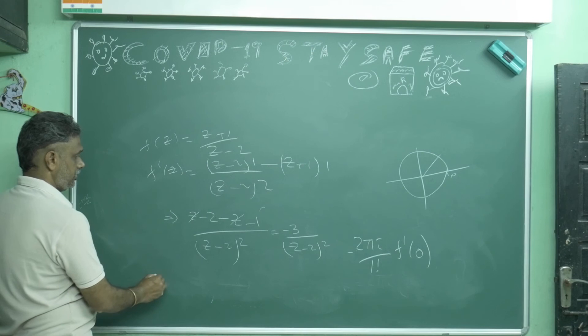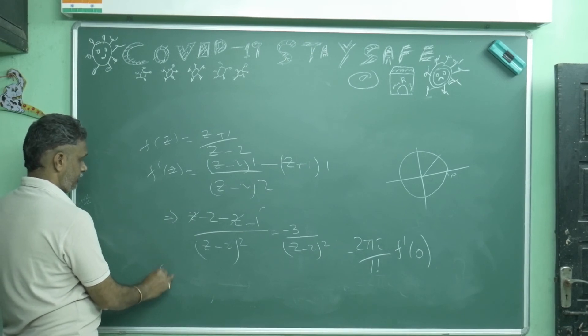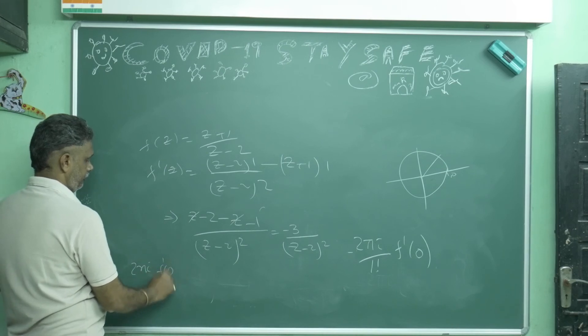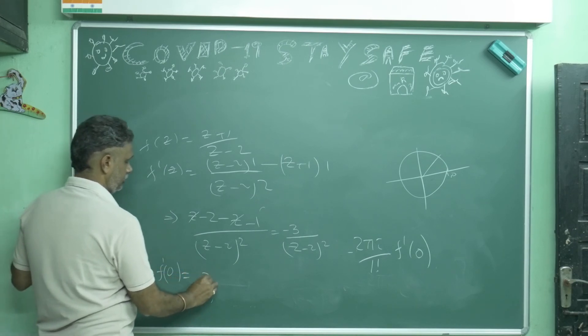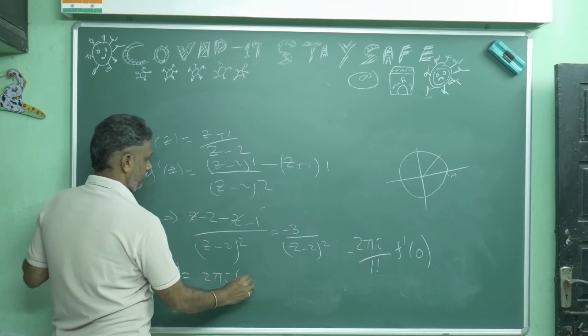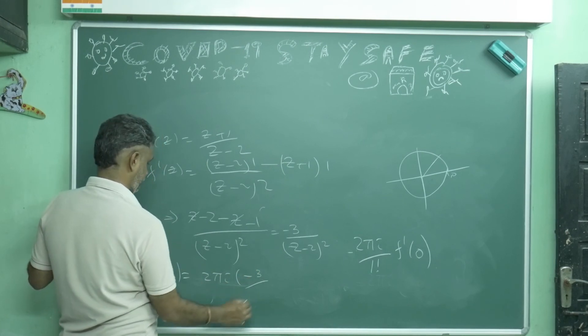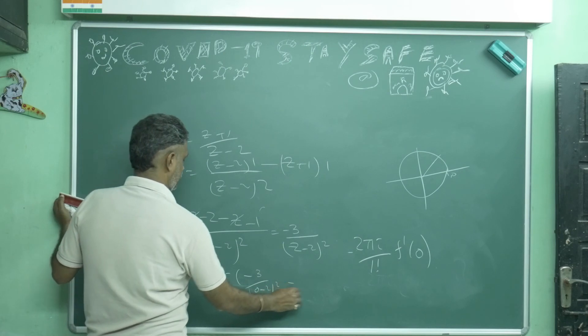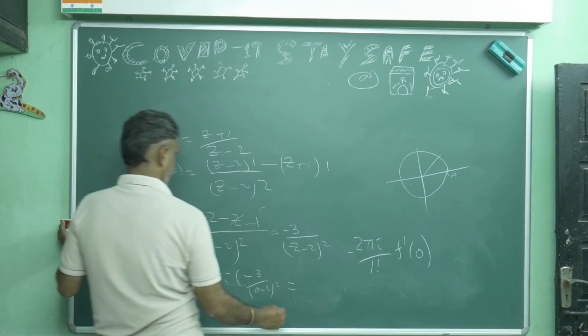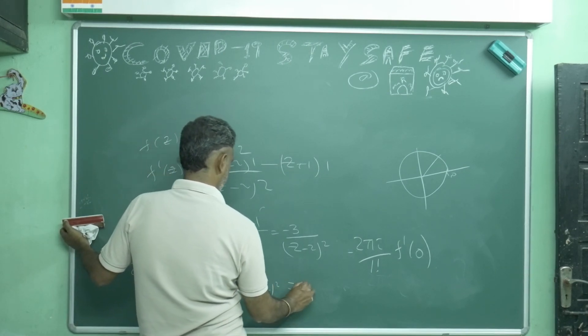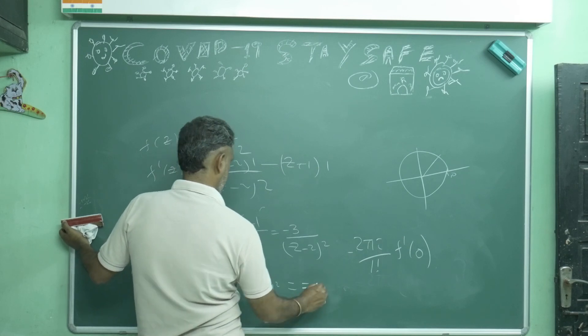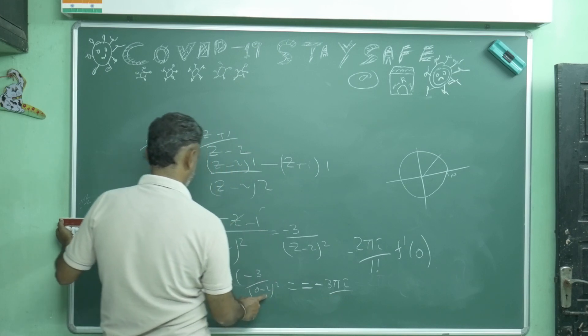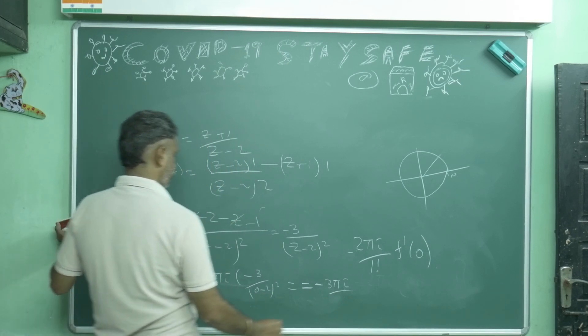Now f dash of 0 equals what? 2π i into f dash of 0 equals 2π i times minus 3 by (0-2) whole square, that is 4. This 2 and 2 will cancel. So this is minus 3π i by 2.